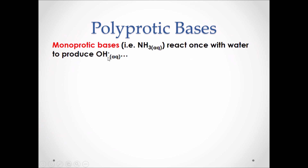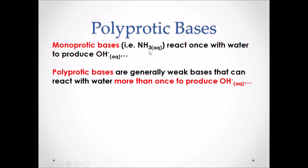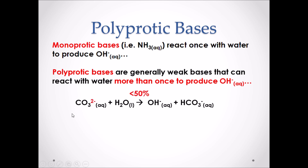Polyprotic bases: monoprotic bases react once with water to produce OH⁻ — for example, NH₃. Polyprotic bases are generally weak bases that can react with water more than once to produce OH⁻. In our example, CO₃²⁻ — the 2⁻ charge represents that it can gain up to two hydrogens, making it a polyprotic base. CO₃²⁻ reacts with water, gaining a hydrogen and forming OH⁻ and HCO₃⁻. This reaction occurs less than 50%.